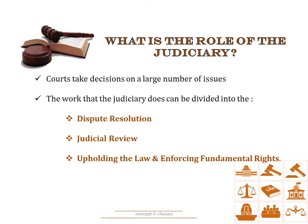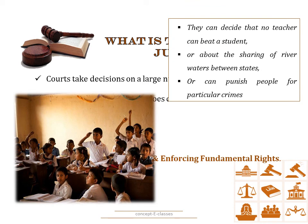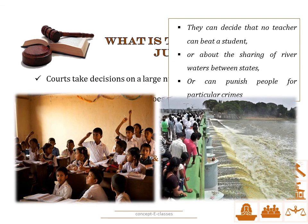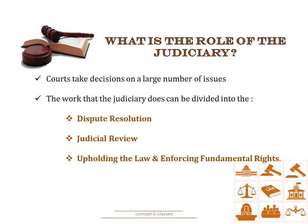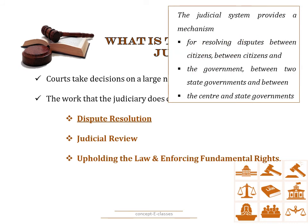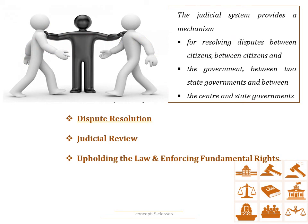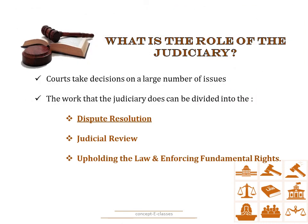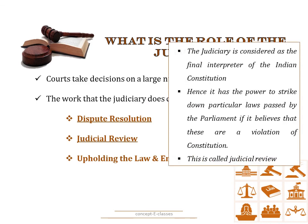Courts take decisions on a large number of issues. For example, they can decide that no teacher can beat a student, or about sharing of river water between states. The courts can even punish people for particular crimes. Broadly, the work that the judiciary does can be divided into the following. The first one is dispute resolution — the judicial system provides a mechanism for settling any disputes between citizens and citizens, between the government and the citizens, between two state governments, and even between the center and the state government.